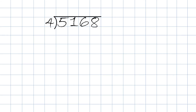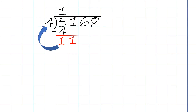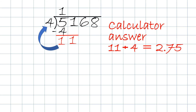So here we have a 4-digit dividend: 5,168 divided by the divisor 4. The first thing we do is 5 divided by 4. We know that 4 goes into 5 once without going over, so we put the 1 on top over the 5. Then we take 1 times 4, which will be 4, and write the 4 underneath the 5. We then take 5 minus 4 — the answer will be 1. Then we go to the 1 next to the 5 and bring it straight down. Now we have 11. We then take 11 divided by 4 — the answer will be 2.